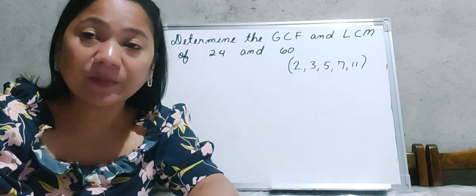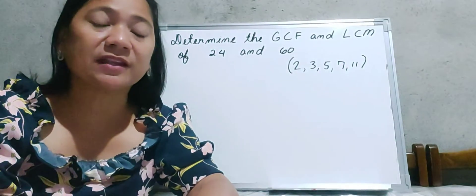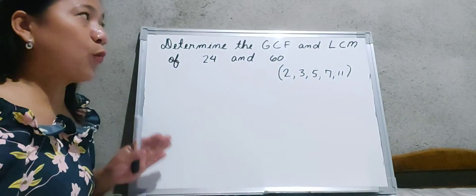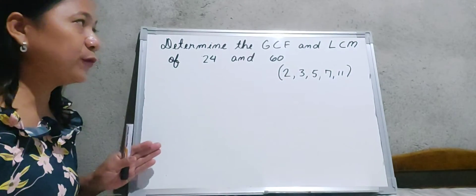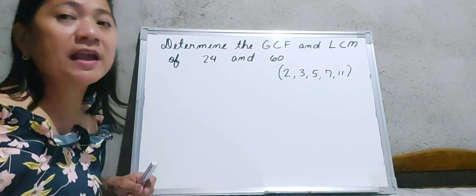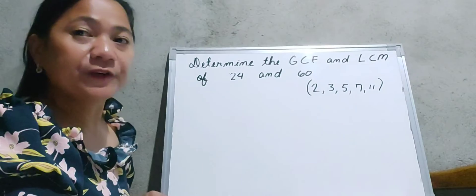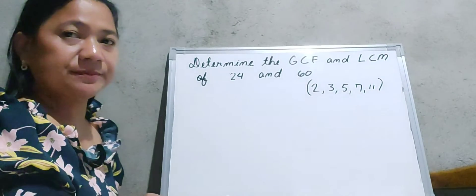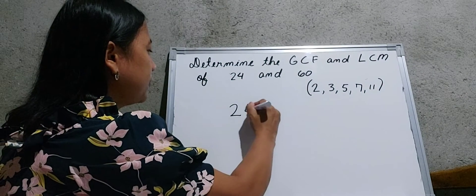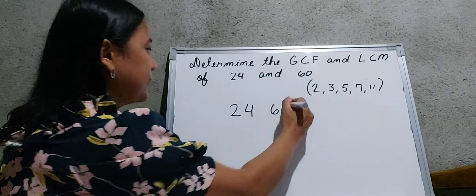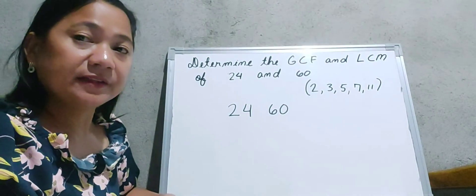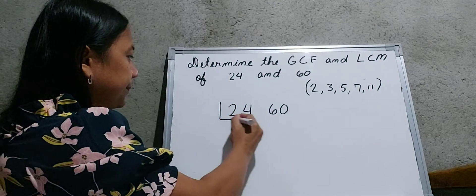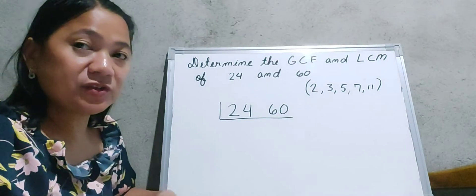We will use a prime number as a divisor that is divisible by the given numbers. Let us now find the GCF and LCM of 24 and 60 using the continuous division method. The first thing we should do is copy 24 and 60 and write them horizontally, then write the division sign in an opposite way.